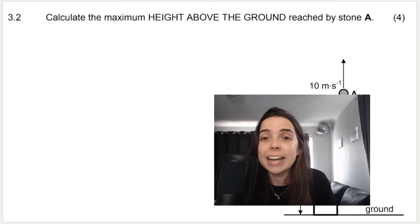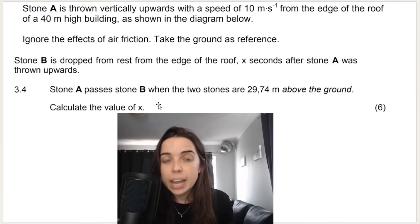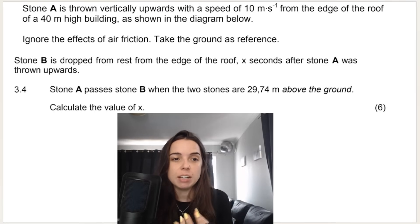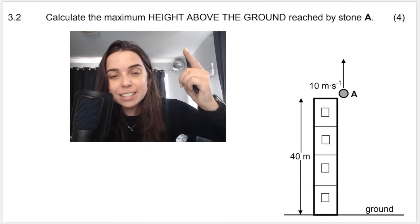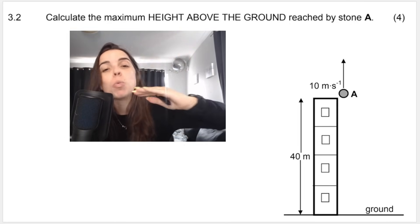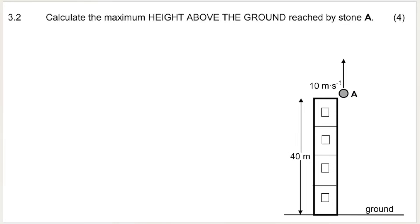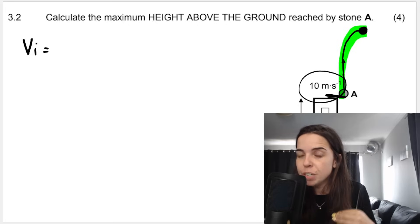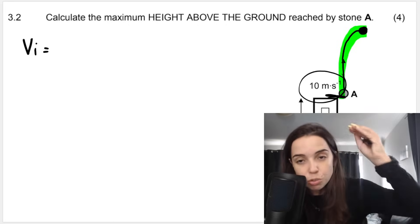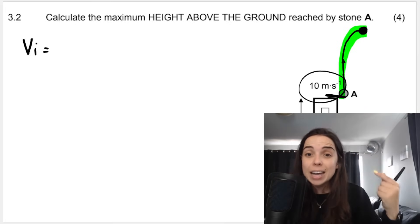Next, calculate the maximum height above the ground reached by stone A. Stone A is thrown vertically upwards and eventually reaches maximum height. In vertical projectile motion, when an object reaches maximum height, its velocity will be zero — that will always be the case. We care about the motion from where A starts at the top of the building to its maximum height. I'm going to choose up as positive because it's the initial direction of motion. You don't have to, but whatever you choose, you must stick with for the rest of your questions. You can't chop and change directions.